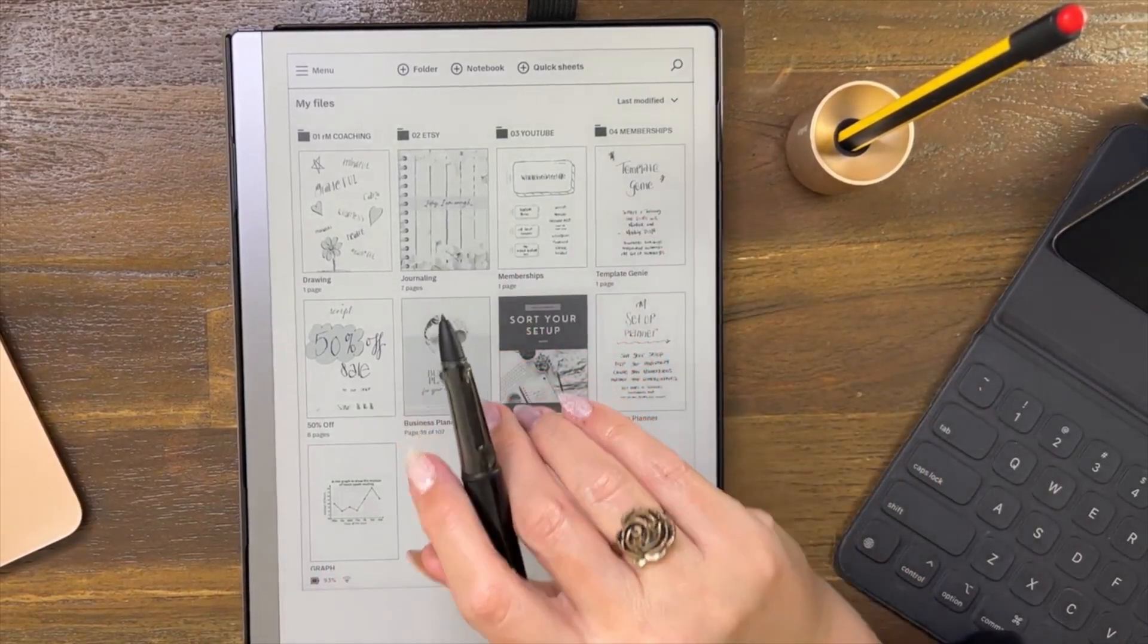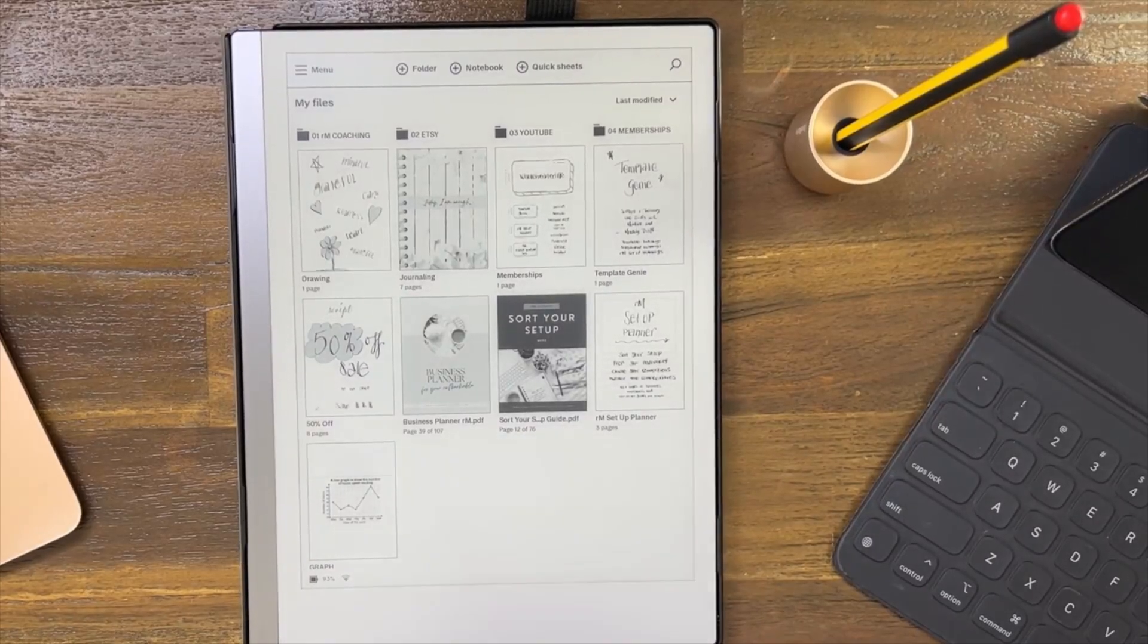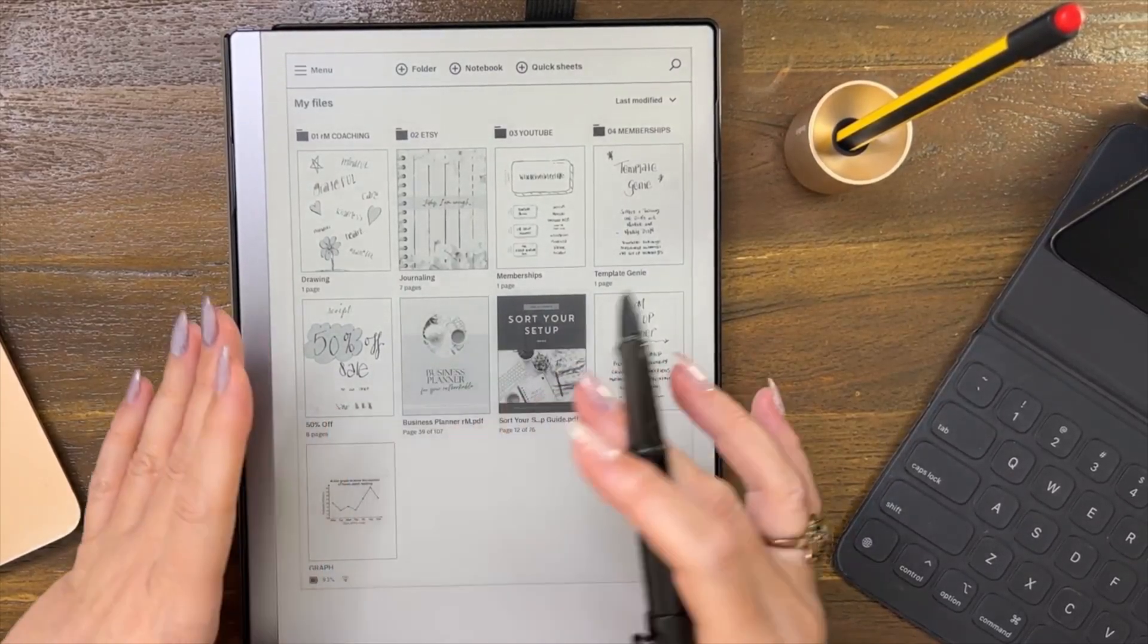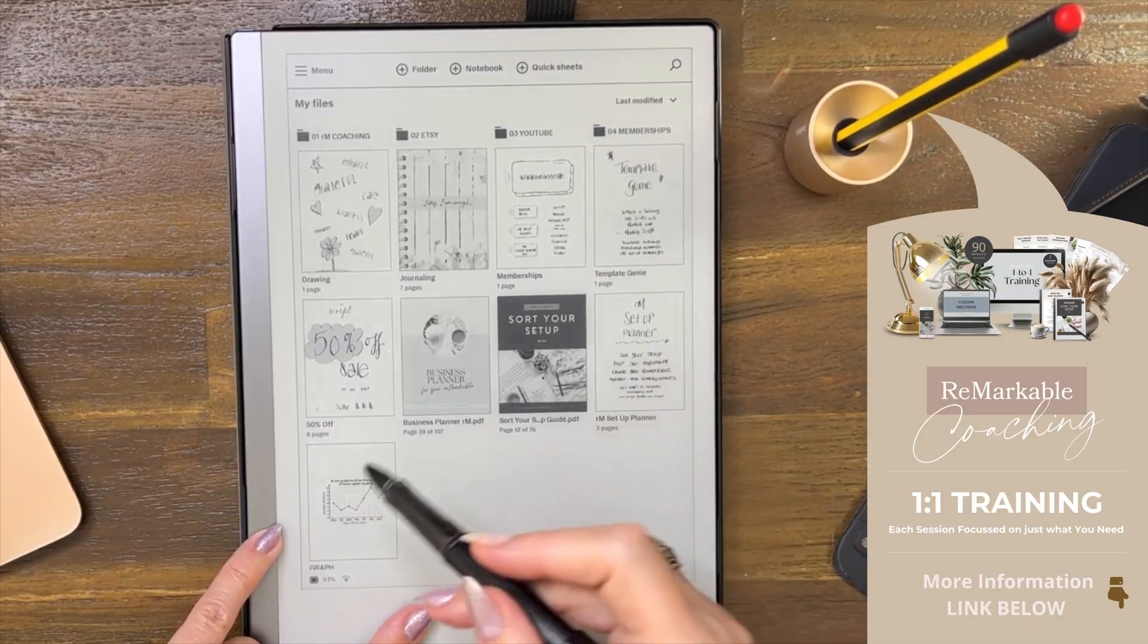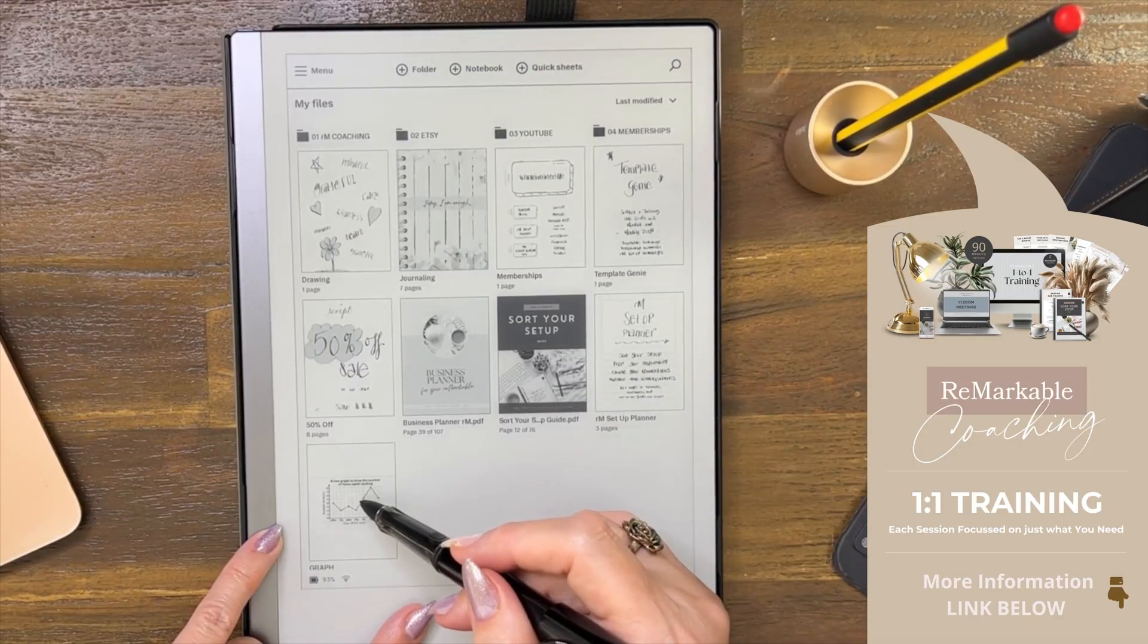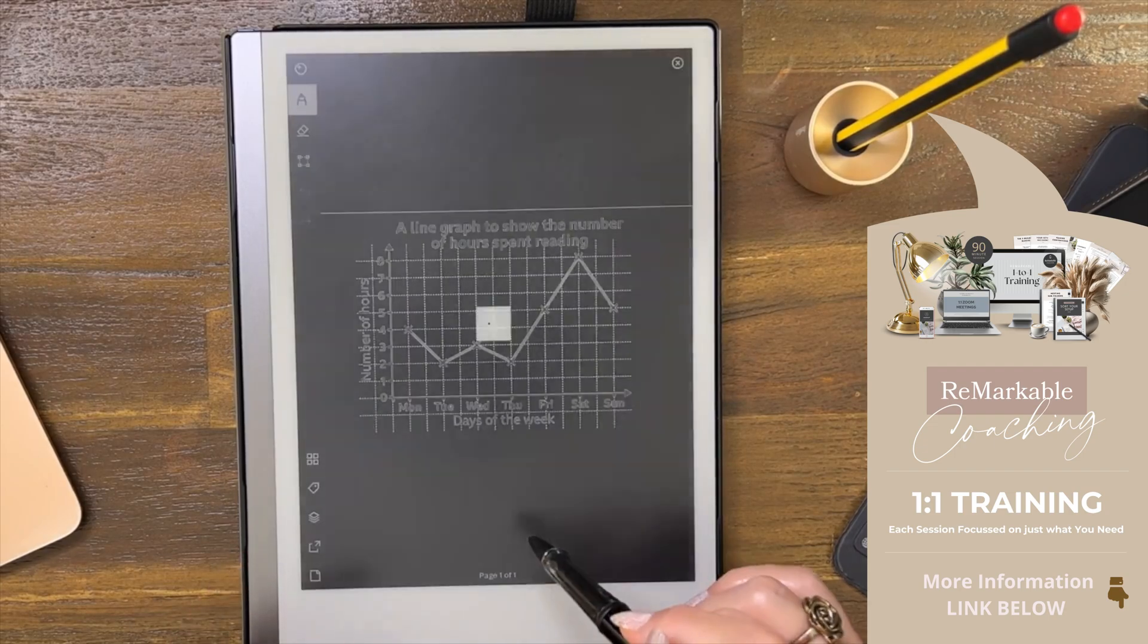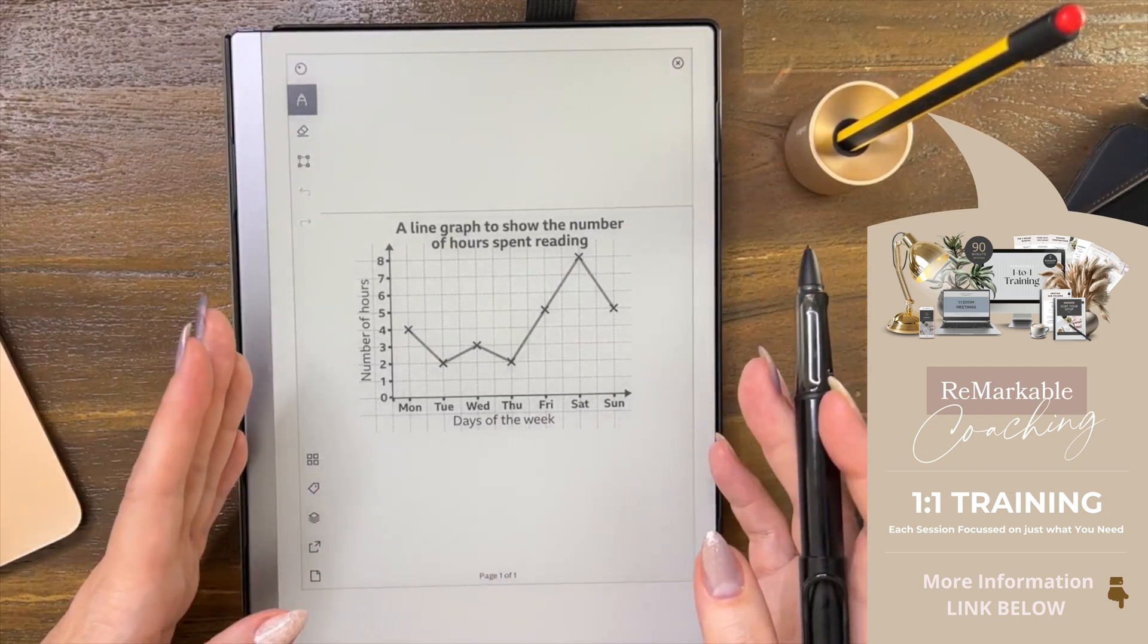Okay, so this is for a viewer who asked how he could handle graphs on the Remarkable. I've uploaded the picture of a graph here on the Remarkable and the only thing you've got is tracing.